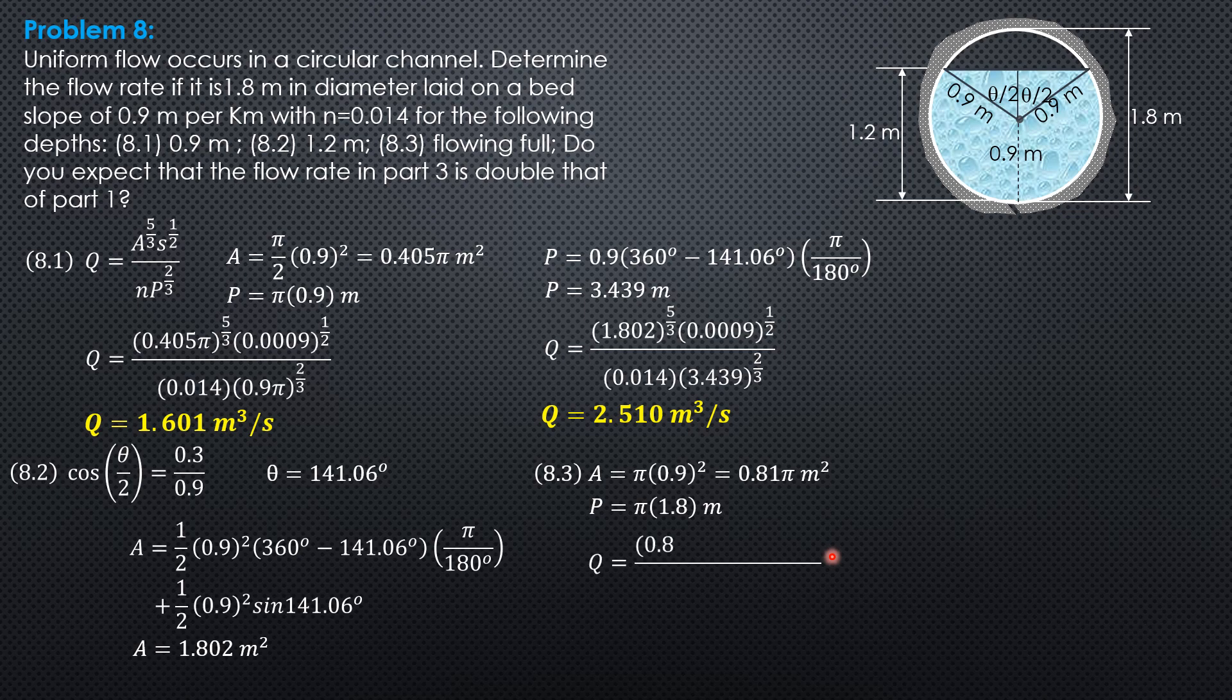So substitute. Q is 0.81 pi to the 5 thirds quantity 0.0009 to the 1 half over 0.014 times 1.8 pi to the 2 thirds. So the discharge is 3.202 cubic meters per second, which is double that of part 1.